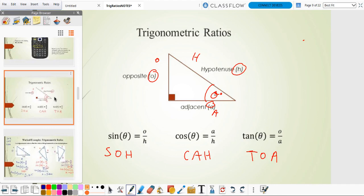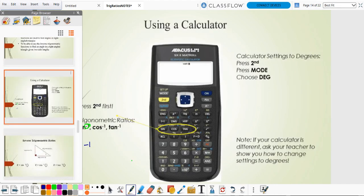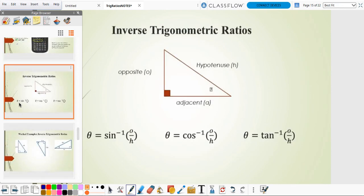See, there's no inverses here. These are for finding lengths. But when it comes to finding angles, you need to use the inverses. And you'll see how they're different here.